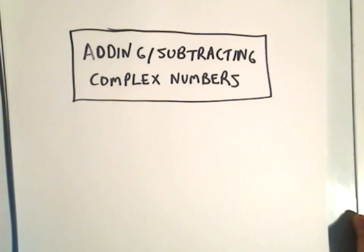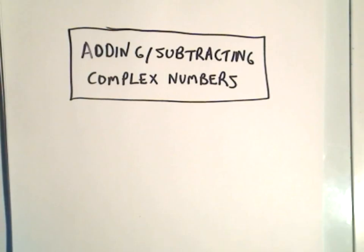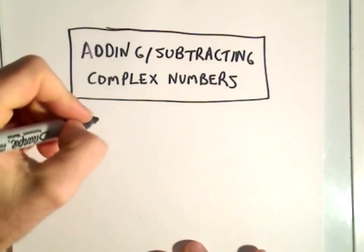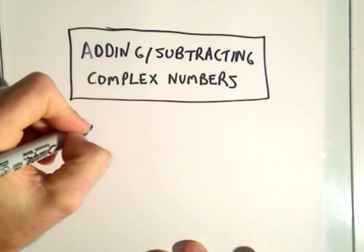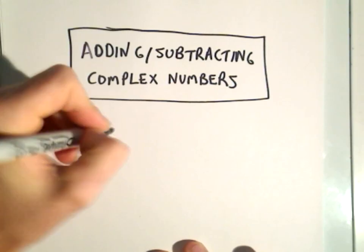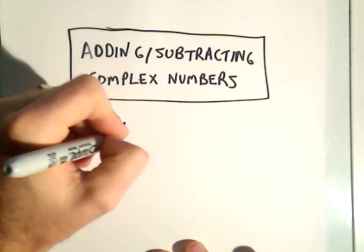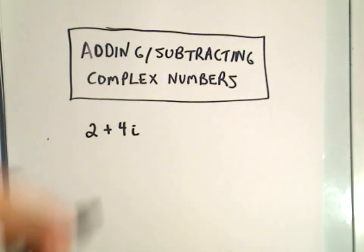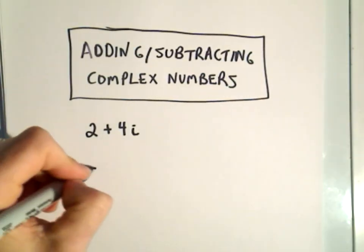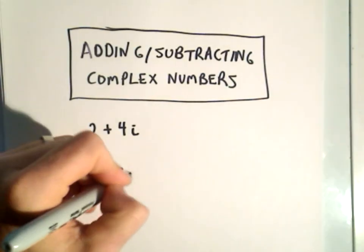In this video I just want to talk about adding and subtracting complex numbers. A complex number is basically a number of the form perhaps 2 plus 4i — so we tack on this i part — or 5 minus 8i.